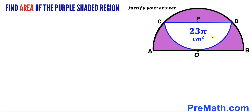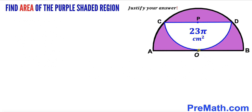Welcome to pre-math. In this video we have a small semicircle with center P fully inscribed in a big semicircle with center O, as shown in the diagram. The area of this small semicircle has been given as 23π cm², O is the point of tangency, and chord CD is the diameter of the smaller semicircle.